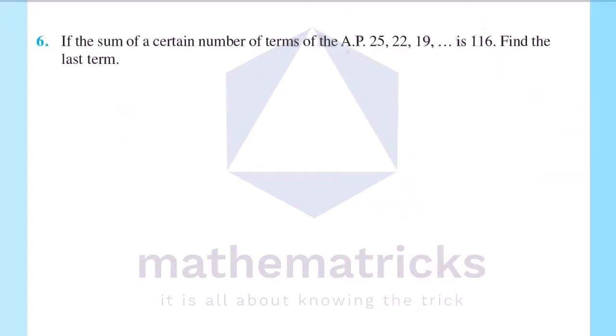Question 6: If the sum of a certain number of terms of the AP 25, 22, 19, ... is 116, find the last term. Here the sum of the terms of the AP is 116, and we need to find the last term.